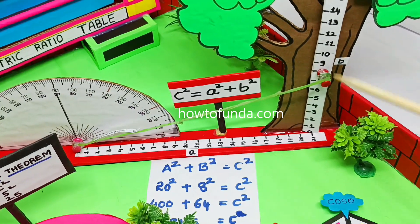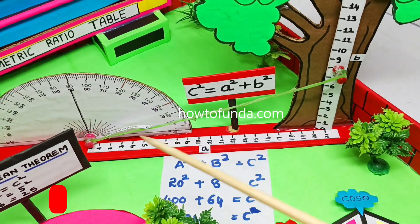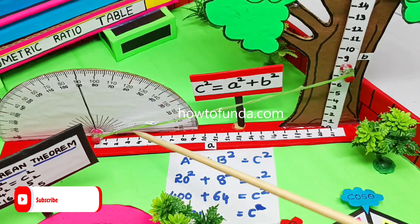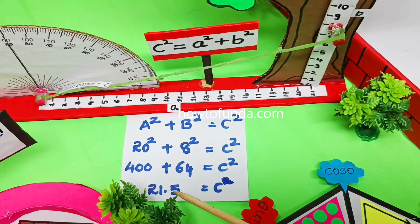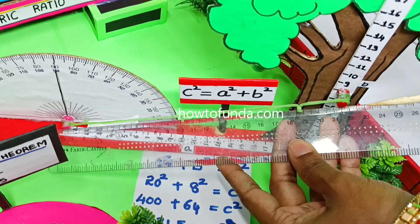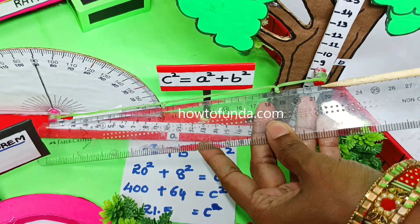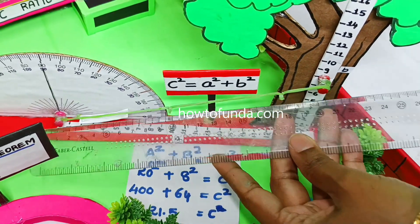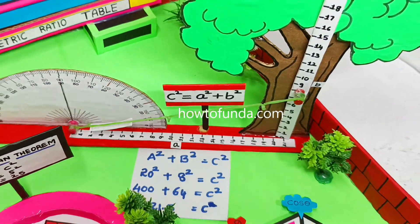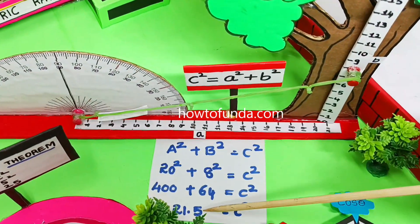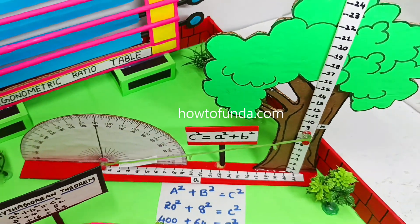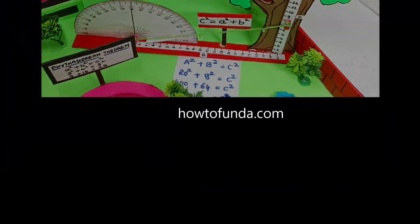Once we move this height to 8 centimeter, now we will try to measure the hypotenuse. The hypotenuse we should get is 21.5 centimeters. So now the measurement of hypotenuse which is 21.5, that is the actual result we got by this example that depicts or proves the Pythagorean theorem.